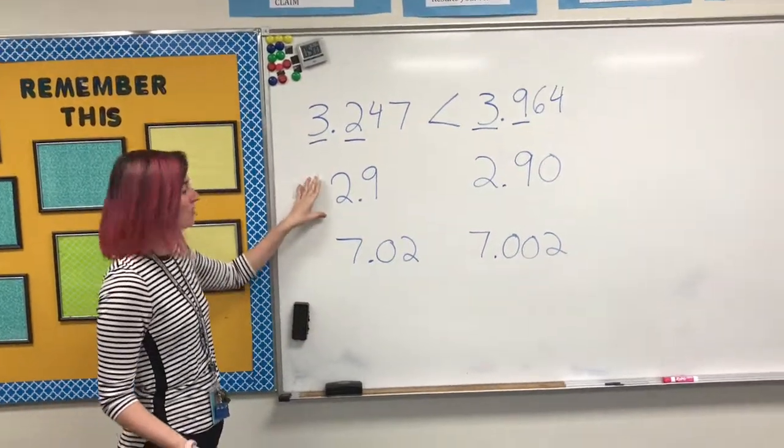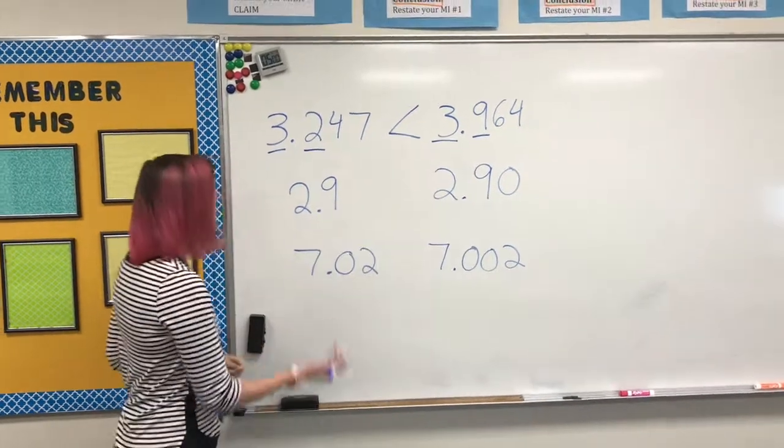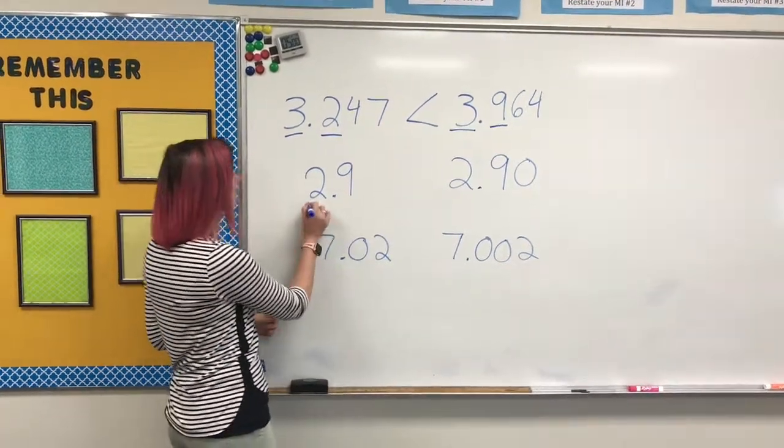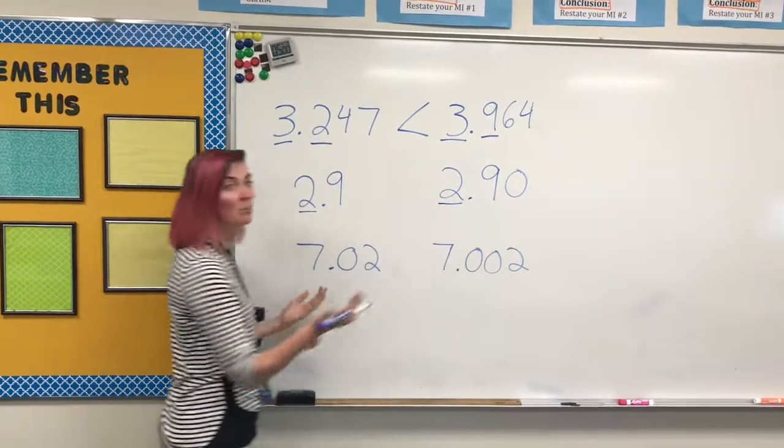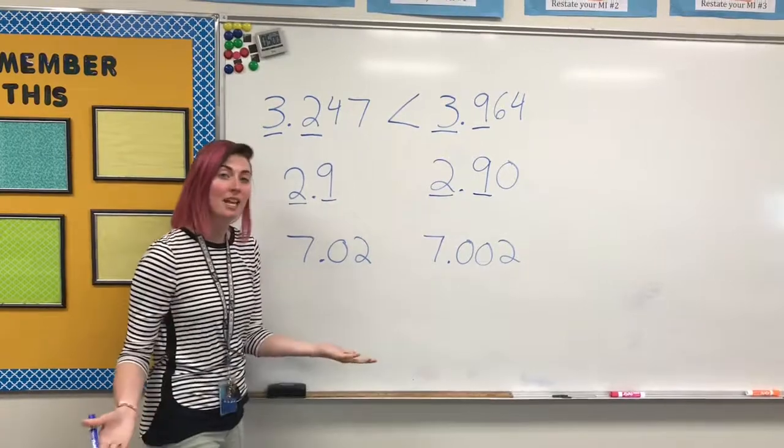Now our next example, we have 2 and 9 tenths being compared to 2 and 90 hundredths. Starting with the first place value of the ones, 2 and 2, both the same, moving into the tenths. 9 and 9, still the same.